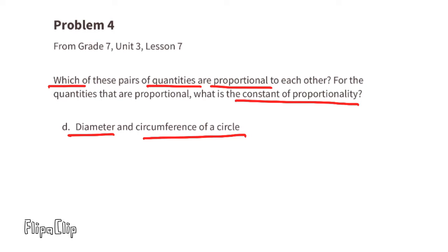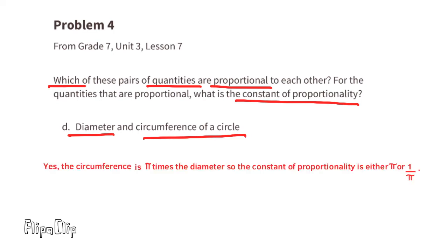Part D: diameter and circumference of a circle — yes, they're proportional. The circumference is pi times the diameter, so the constant of proportionality is pi or 1 over pi.